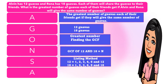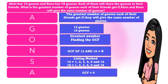For the solution, I will use the listing method — you can use any of the three methods that is easier for you. List all the factors of 12: 1, 2, 3, 4, 6, and 12. For 18: 1, 2, 3, 6, 9, and 18. Find the GCF — the greatest common factor — which is 6. So the greatest number of guavas each of their friends can get is 6.